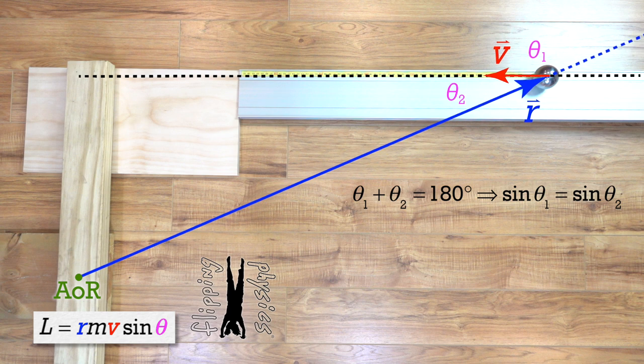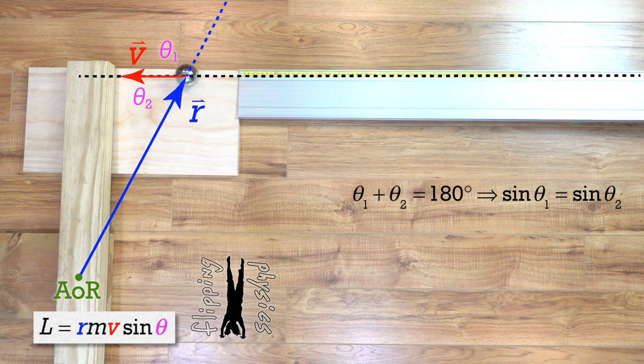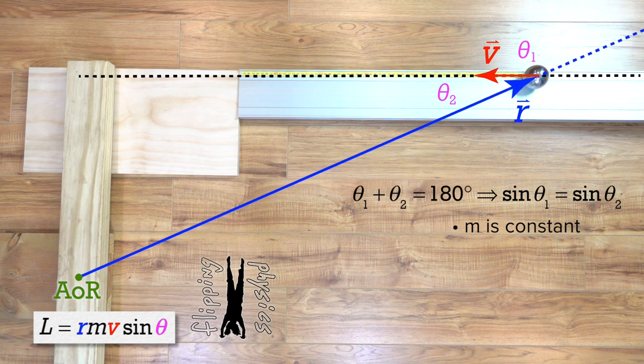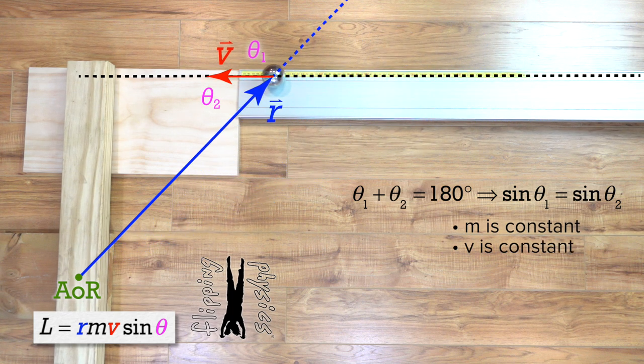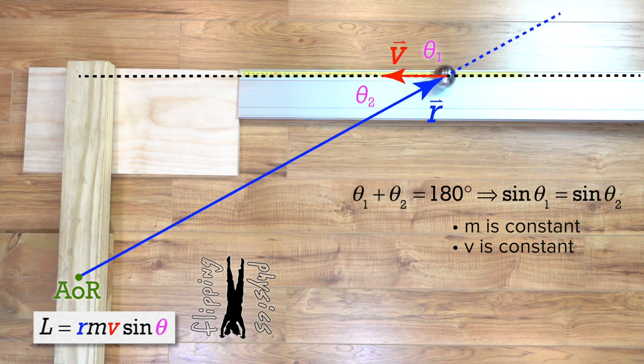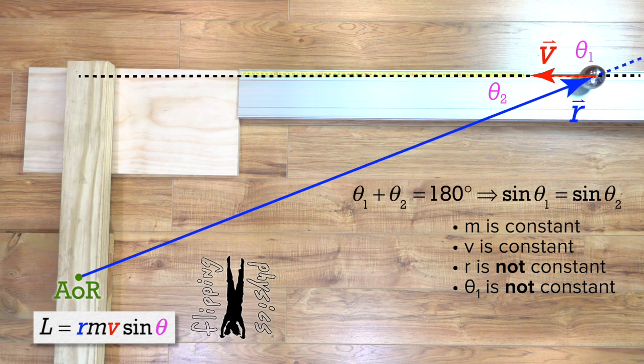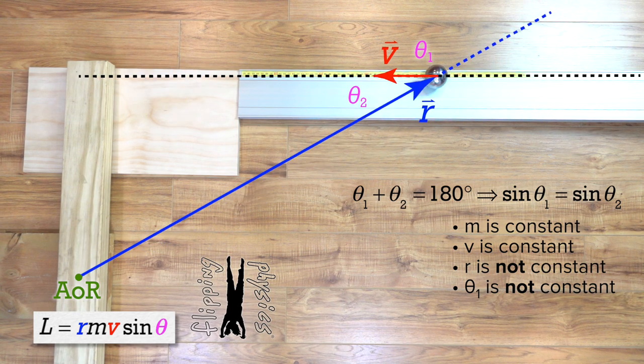Looking at the equation for the angular momentum of the point particle before it collides with the wooden board. m, the mass of the point particle, is constant and v, its linear velocity, is also constant. But do you all see how both the r vector and theta 1 are changing as a function of position of the point particle? Yes.